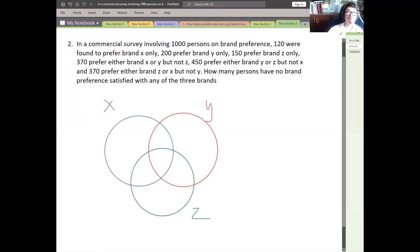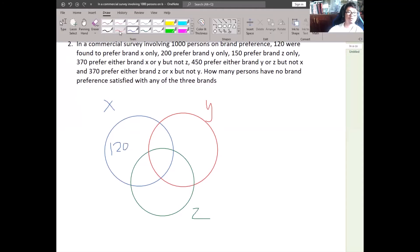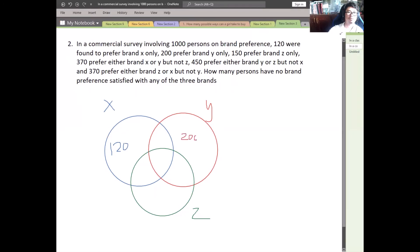The problem stated 120 were found to prefer brand X only, so 120 in the circle of X. 200 for brand Y, and 150 for brand Z. So what is this X? Because this X covered all the brands X, Y, and Z. Or this X has no brand preference, so it covers all our three circles.